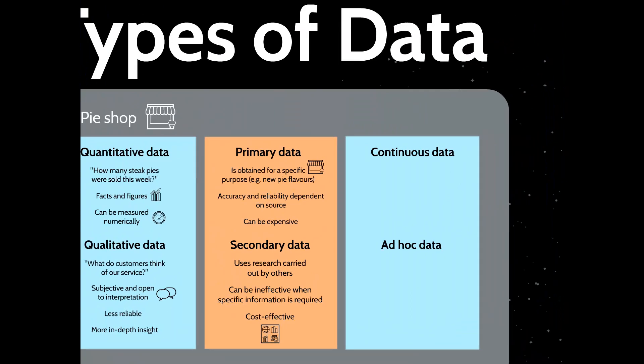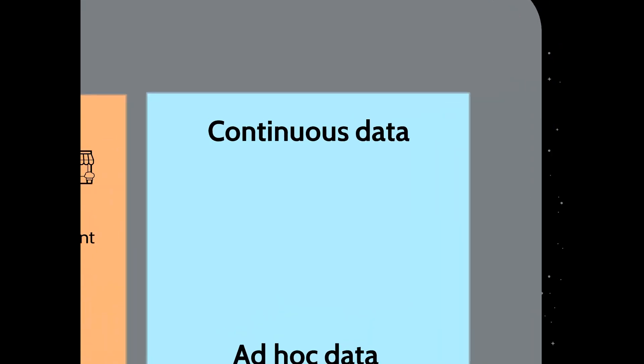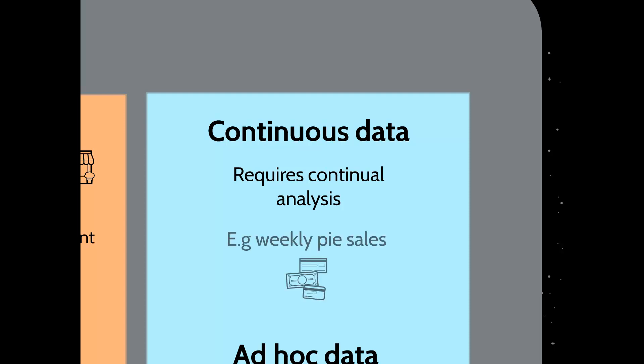The final element relates to time — whether it's continuous or ad hoc data. Continuous data, as the name suggests, requires continual analysis. An example would be weekly pie sales: you don't just measure how many pies you sell in one week and assume that figure applies every week. Of course you need to review it every week to see if it went up or down. You can then identify weeks where sales increased and ask what you did differently that week — you have to monitor it continuously.